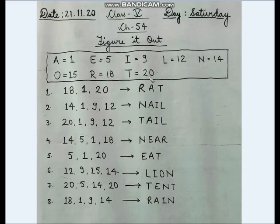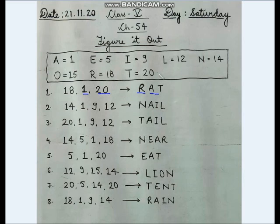Some statements are given and we decode them using these alphabets. The first question: the word made up by letters 18, 1, 20 means a small creature often called mouse. So 18 is R, 1 is A, and 20 is T. So the answer is rat — a small creature often called mouse is rat.